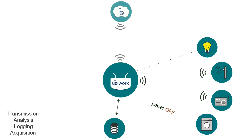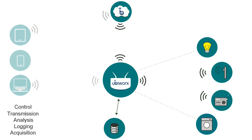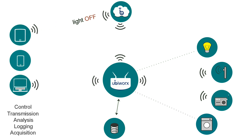Transmission — the raw data or filtered information can be reported to the cloud. Control — devices can be controlled by UbiWorks. They can be switched on or off or put into user-defined states.